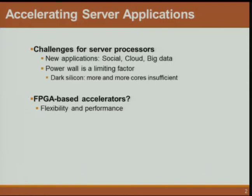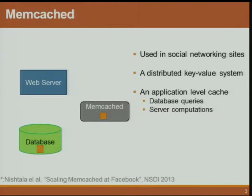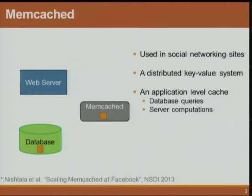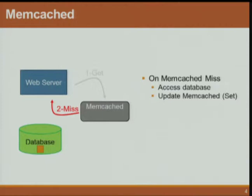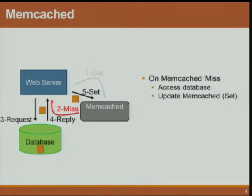One solution architects are looking at to tackle both issues is using specialized hardware, also known as accelerators. We are also trying to accelerate server applications using FPGAs to provide both flexibility and performance. One relatively popular application used in many social networking sites is Memcached — a distributed key-value system. It acts as the application-level cache between front-end web servers and back-end servers like databases. Whenever a web server wants data from a database, it first tries Memcached. If Memcached has the data, that's a hit — a fast access because Memcached keeps everything in memory. If not, that's a miss, and the web server retrieves the data from the database and updates Memcached for future use.